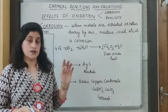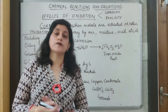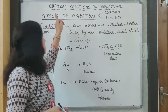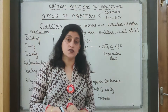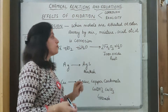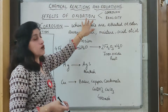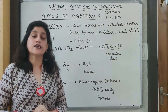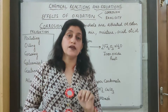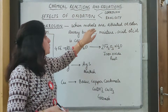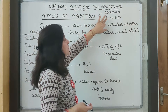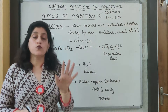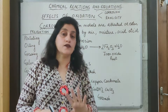Hello students, this is the next video. In this video we will be ending this chapter on chemical reactions and equations. The last topic left is effects of oxidation. Oxidation has some negative effects, and here we are going to discuss two such effects: corrosion and rancidity. Taking them one by one.